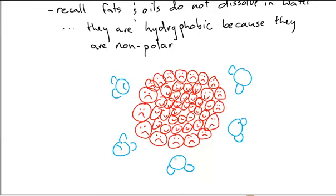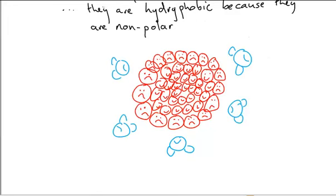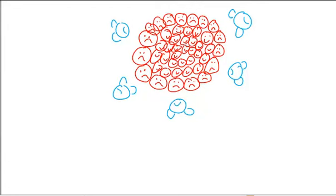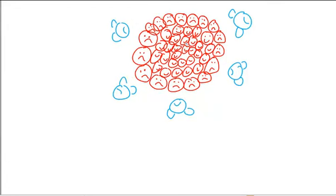They're all sad too. So what we end up with, if we didn't have emulsifiers in our body, we would end up with these big globs of fat everywhere and a very hard time breaking down fats and turning them into something our body could use.